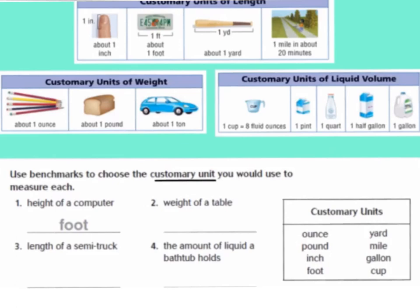Now, the customary units of liquid volume. One cup, or eight fluid ounces, would be about a glass of water. One pint is a little bit bigger than the cartons of milk you get at school. One quart would be two of these pints. One half gallon is two of those together, and one gallon would be what you see for a gallon of milk at the store.